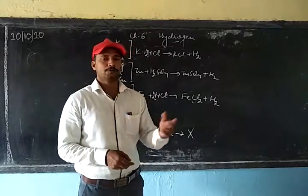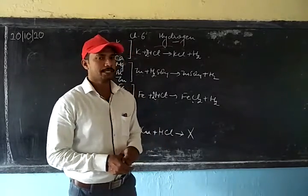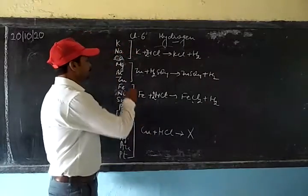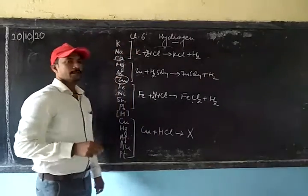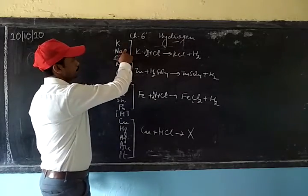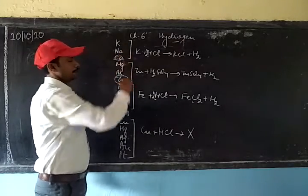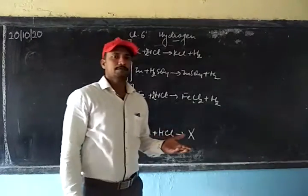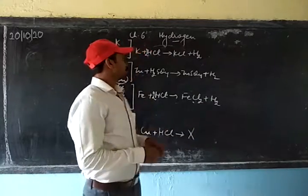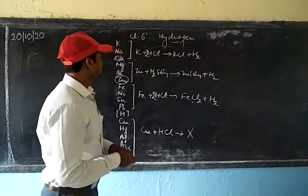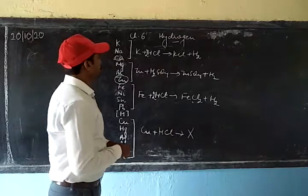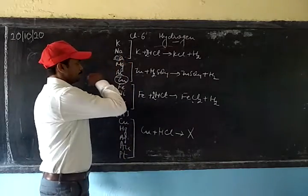To prepare hydrogen gas in the lab, we generally prefer zinc. The reason is that sodium and potassium show a highly violent reaction with acid, so we do not take these metals to prepare hydrogen in the lab. Calcium and magnesium are highly expensive metals.